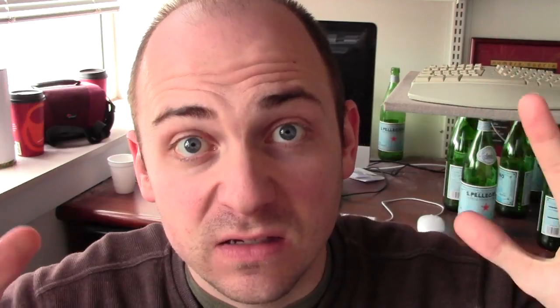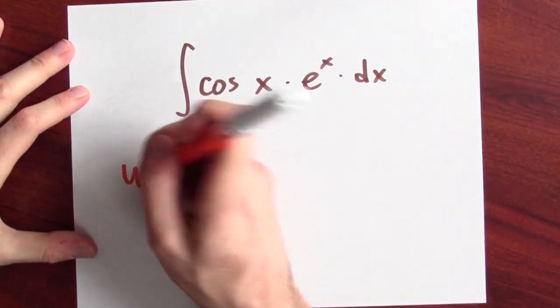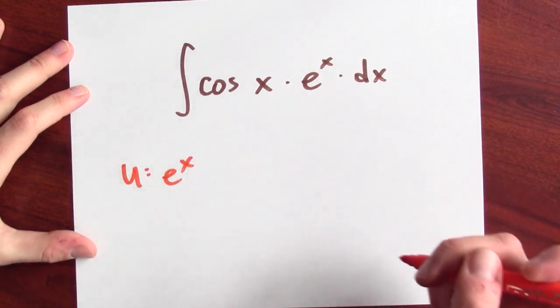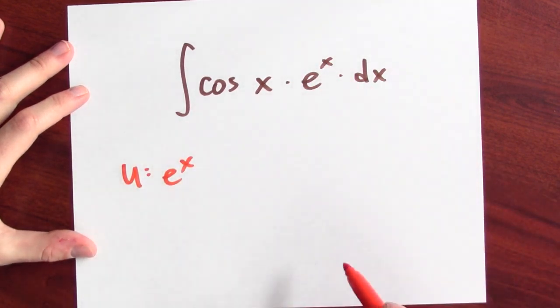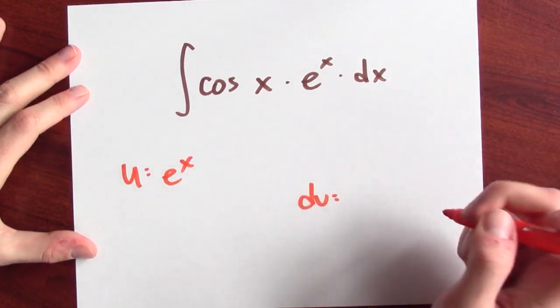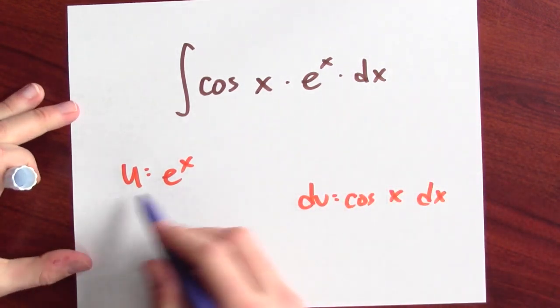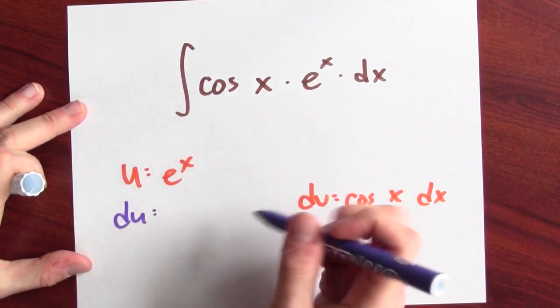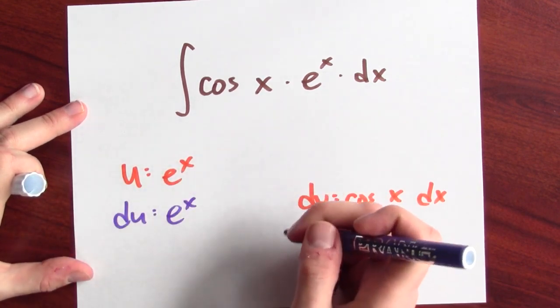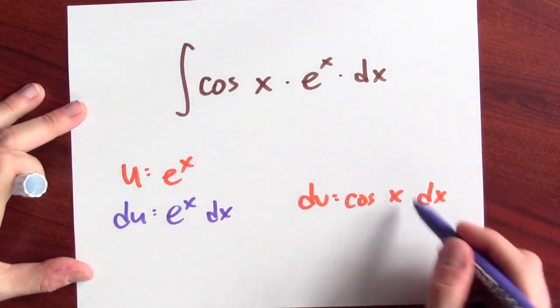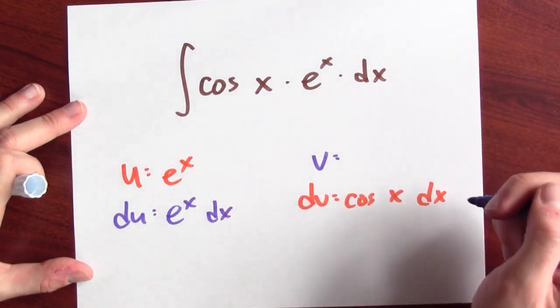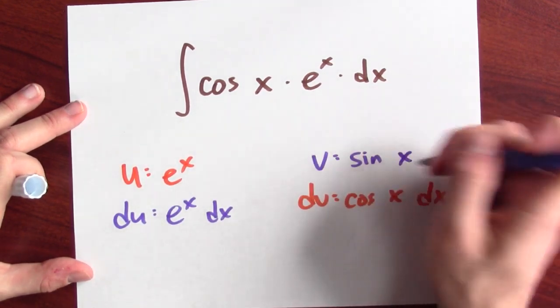So let's try to transform the integral that we're attacking here. Let's transform e to the x cosine x into something else. I'll make u be e to the x, because I don't really mind differentiating that. And I'll make dv cosine x dx. In that case, the derivative of e to the x is just e to the x. And what's an anti-derivative of cosine? An anti-derivative of cosine is sine.